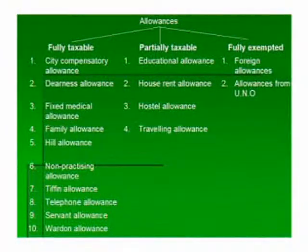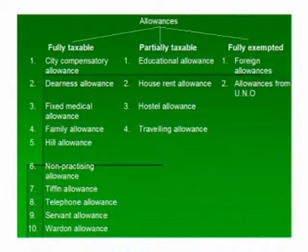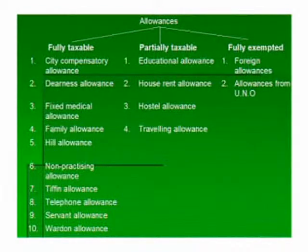The third category is exempted allowances. For example, foreign allowance is fully exempted. Next, allowances from an international organization are also exempted allowances.